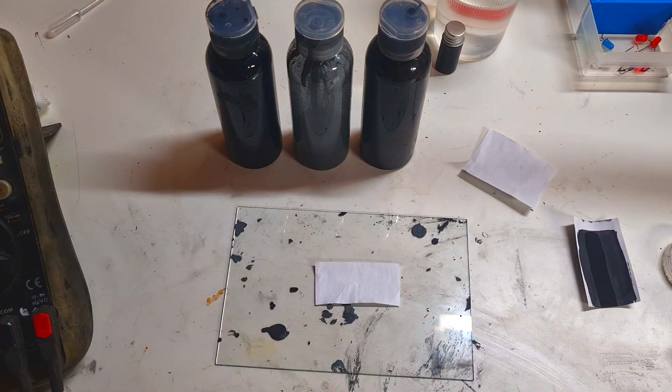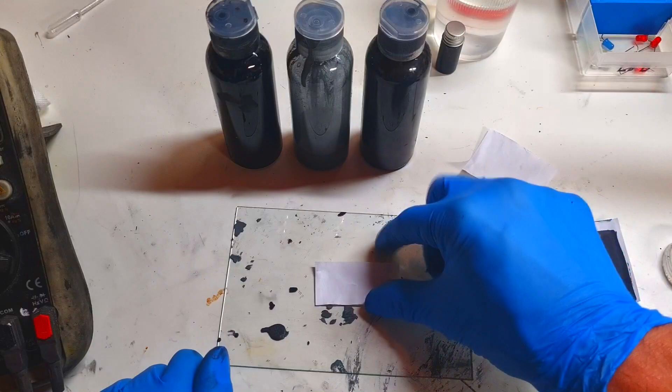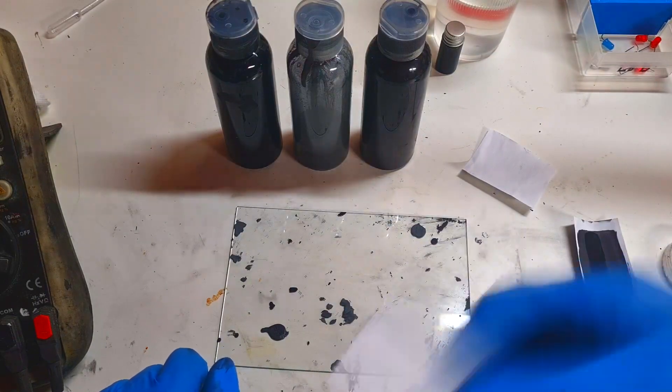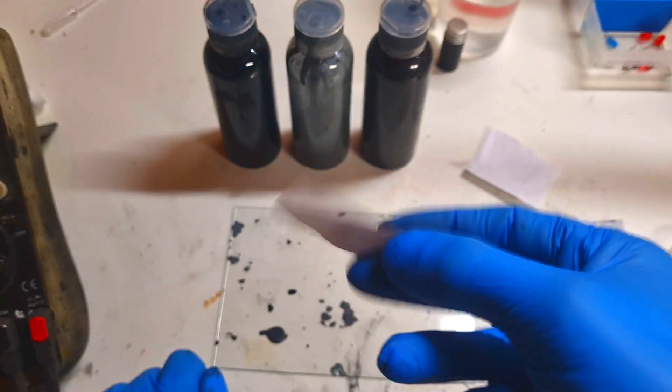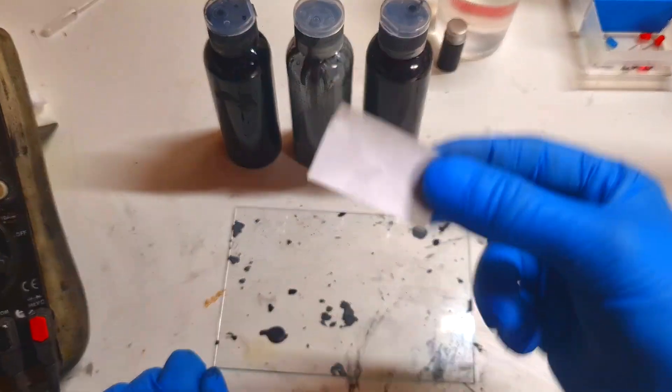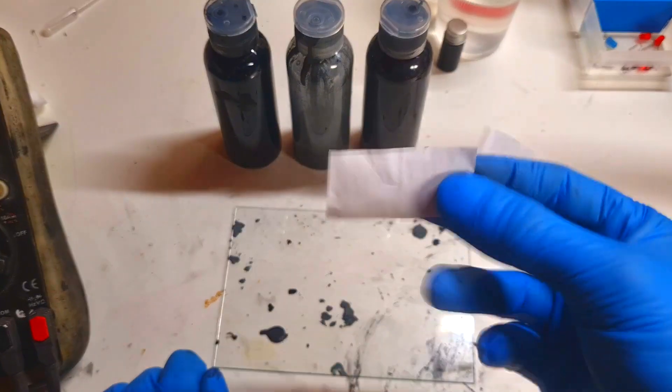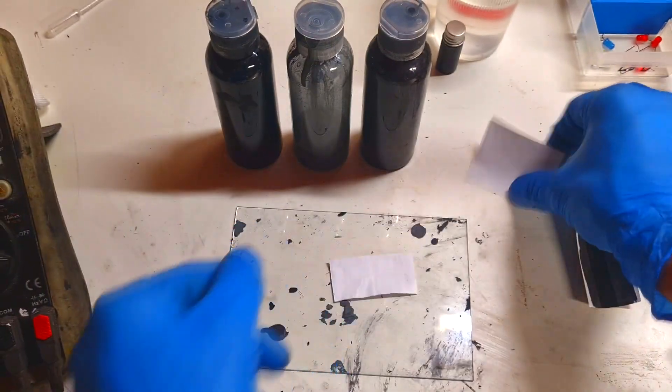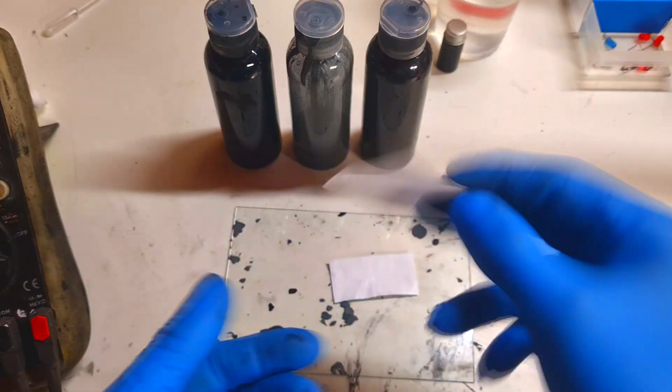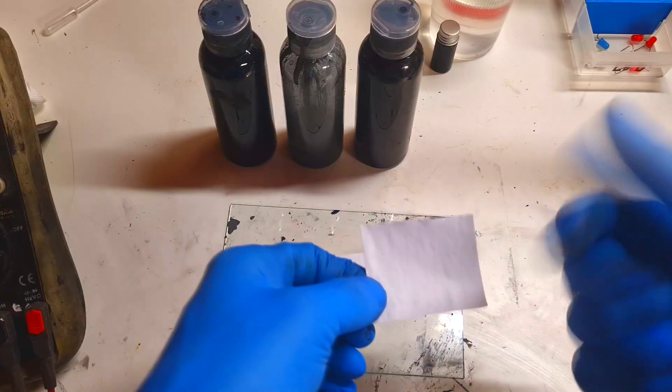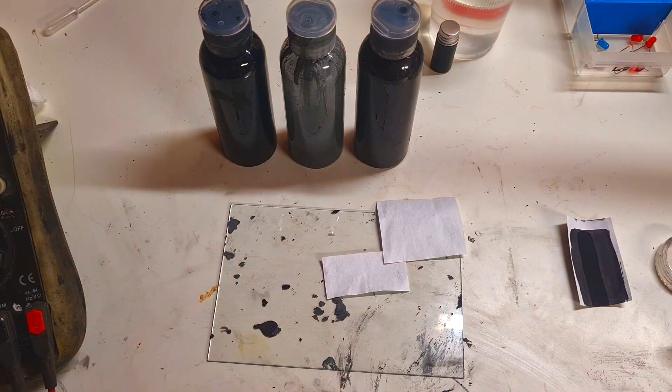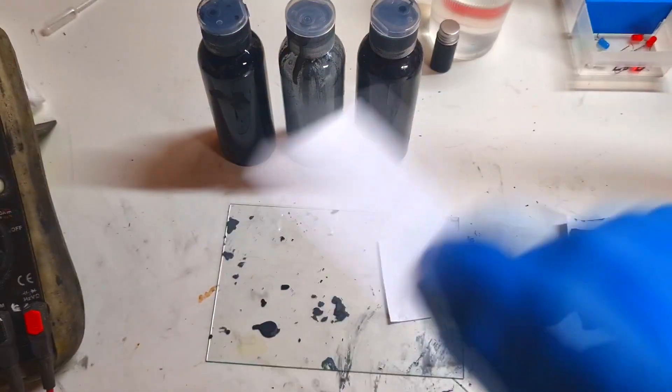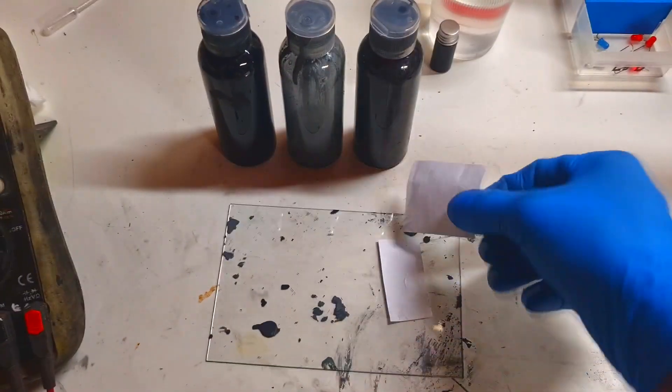What you need to make this battery is, of course, some paper. The paper will act as a separator. This paper I soaked already into some salt water. I soaked this paper for around 10 minutes in salt water and then I put it out and I dry it. And that's it.